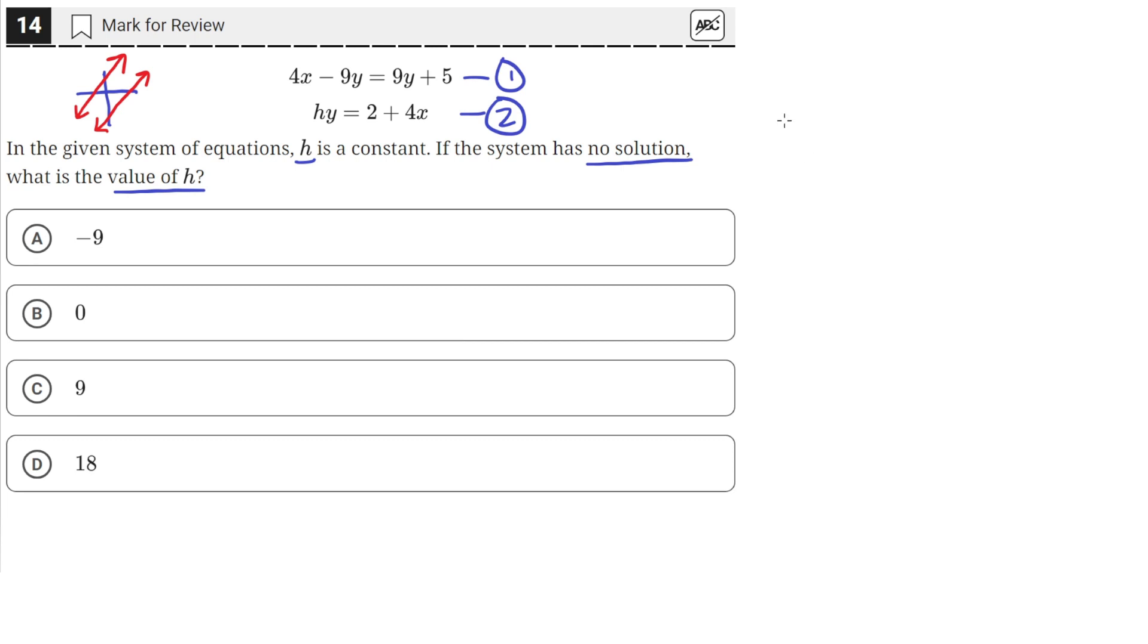So we need to find some value of h that results in the two lines being of the same slope, but different y-intercepts.